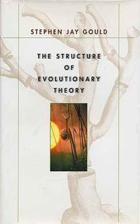Gould described these three propositions as the core of Darwinian central logic, each being so essential to the structure that if any branch were cut it would either kill, revise, or superficially refurbish the whole structure — depending on the severity of the cut. According to Gould, substantial changes introduced during the last half of the 20th century have built a structure so expanded beyond the original Darwinian core, and so enlarged by new principles of macroevolutionary explanation, that the full exposition, while remaining within the domain of Darwinian logic, must be construed as basically different from the canonical theory of natural selection, rather than simply extended.